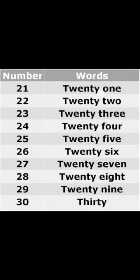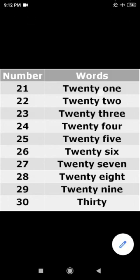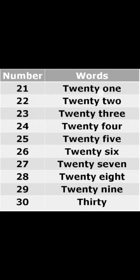So children, let's repeat these number names one more time. The first number is twenty-one. T-W-E-N-T-Y O-N-E. Twenty-one. Then twenty-two. T-W-E-N-T-Y T-W-O. Twenty-two. Then you have twenty-three. T-W-E-N-T-Y T-H-R-E-E. Then twenty-four. T-W-E-N-T-Y F-O-U-R. Twenty-four.